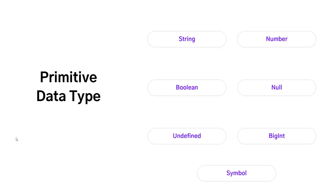When it comes to primitive data types in JavaScript, we have string, numbers, boolean, null, undefined, and bigint. Throughout the series, I will be talking about string, number, boolean, null, and undefined. We will not discuss bigint and symbol in this course, but if you are interested, please go ahead and check out those two data types as well.